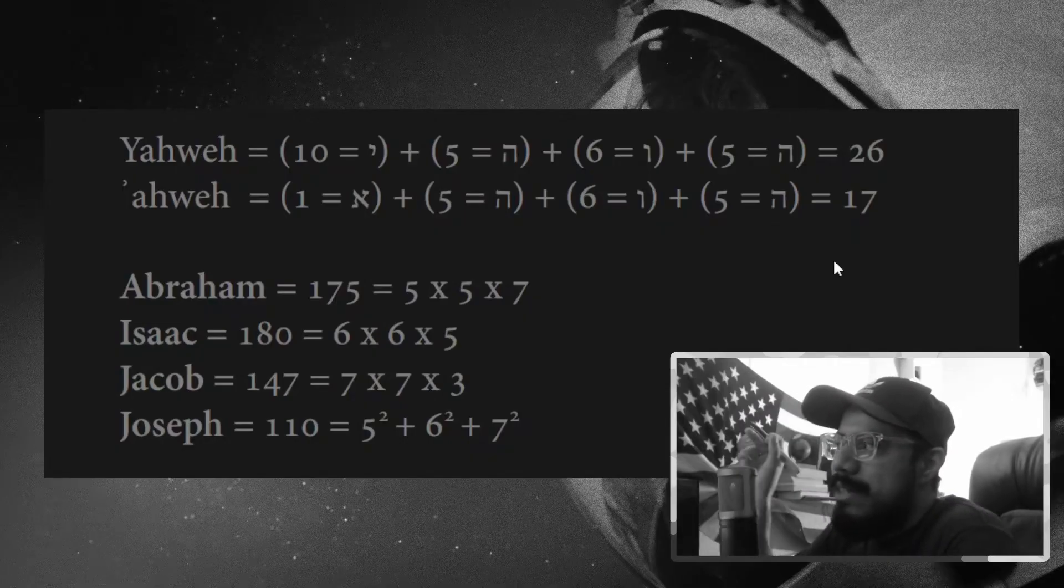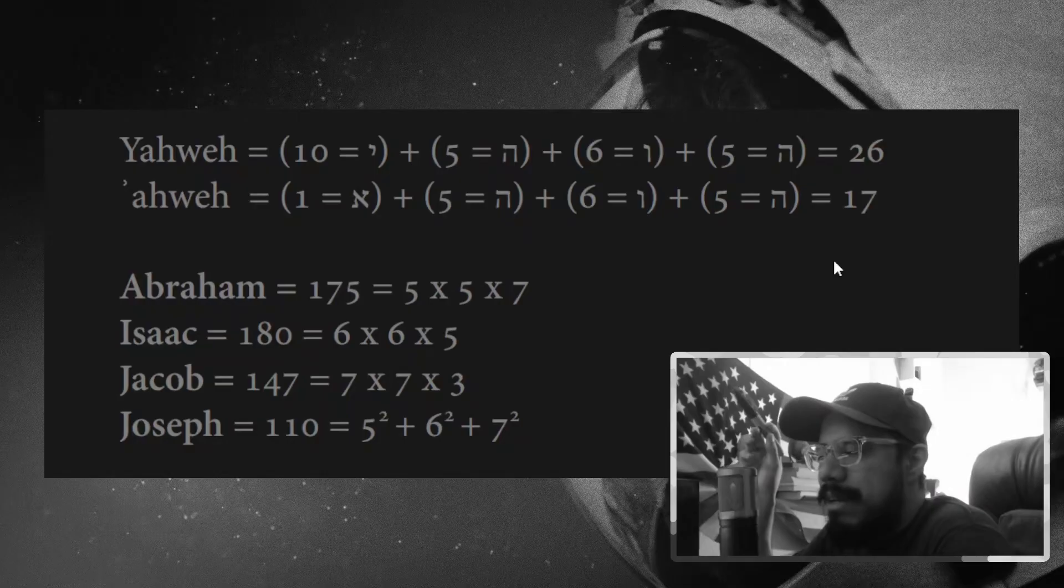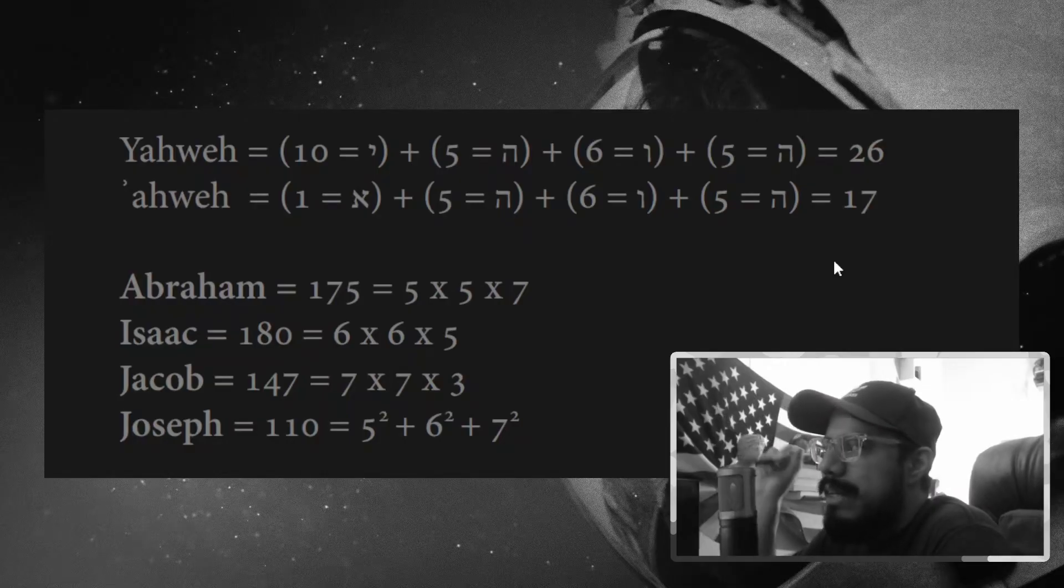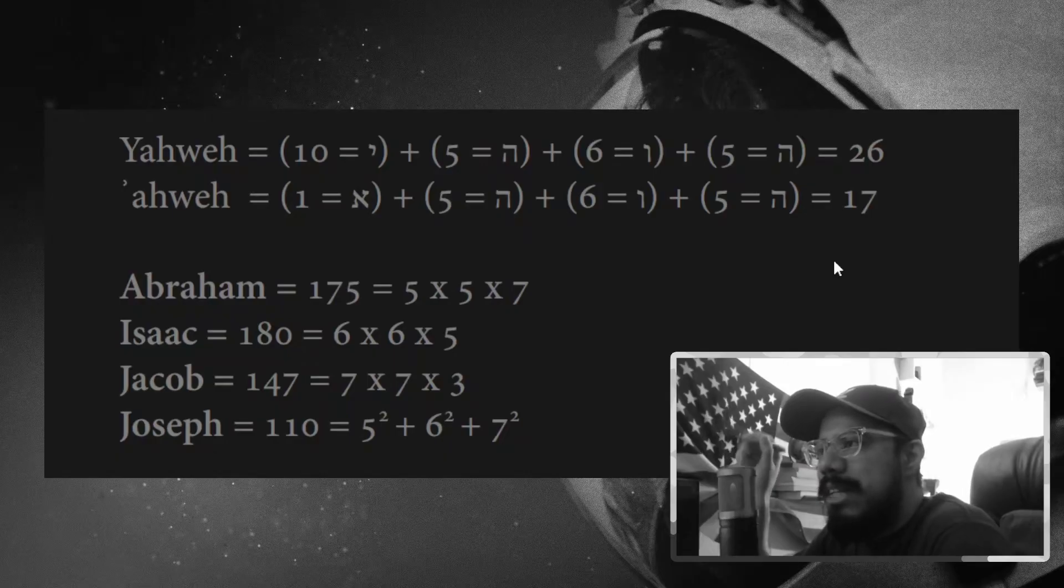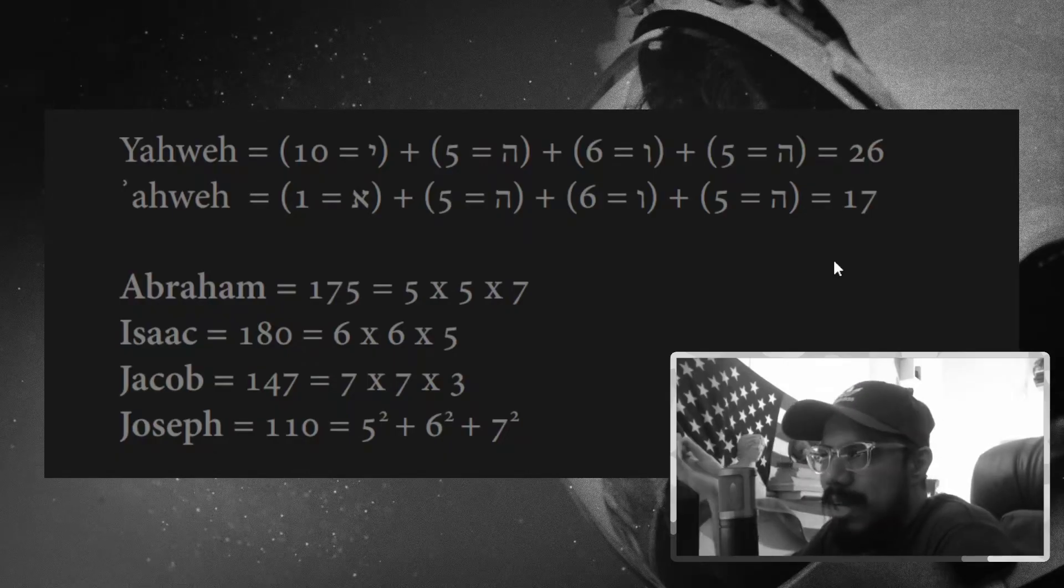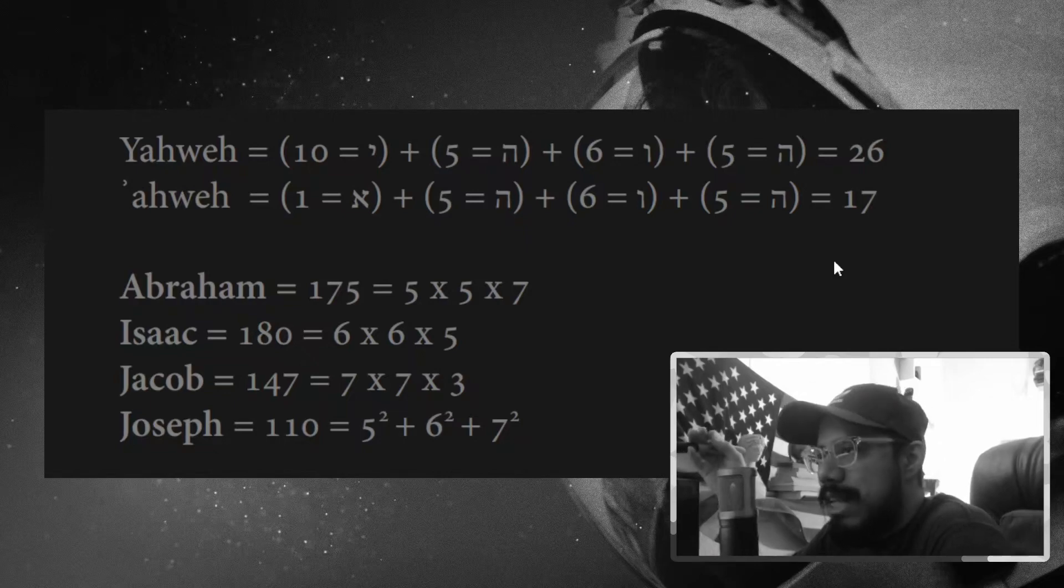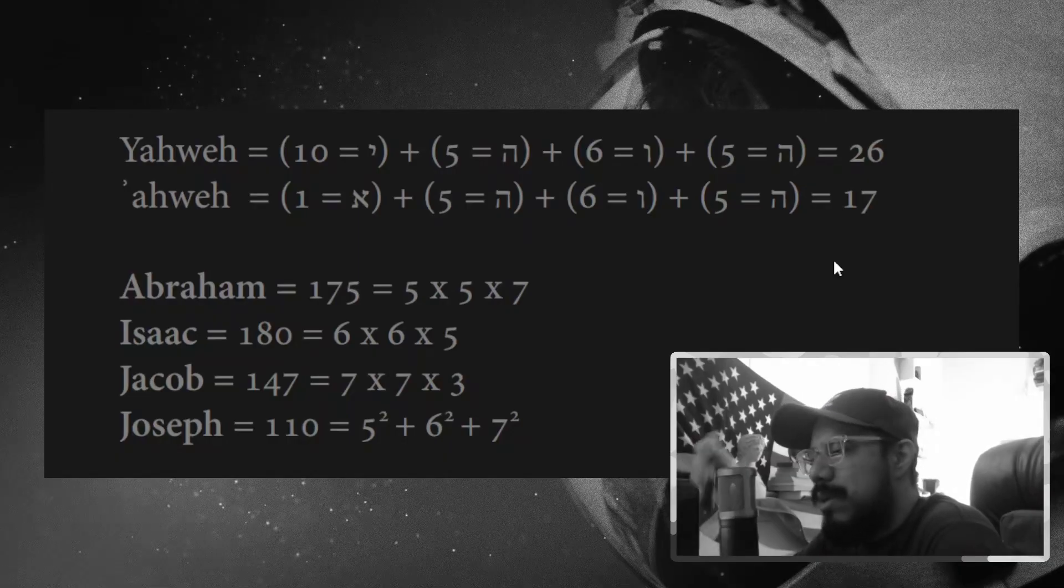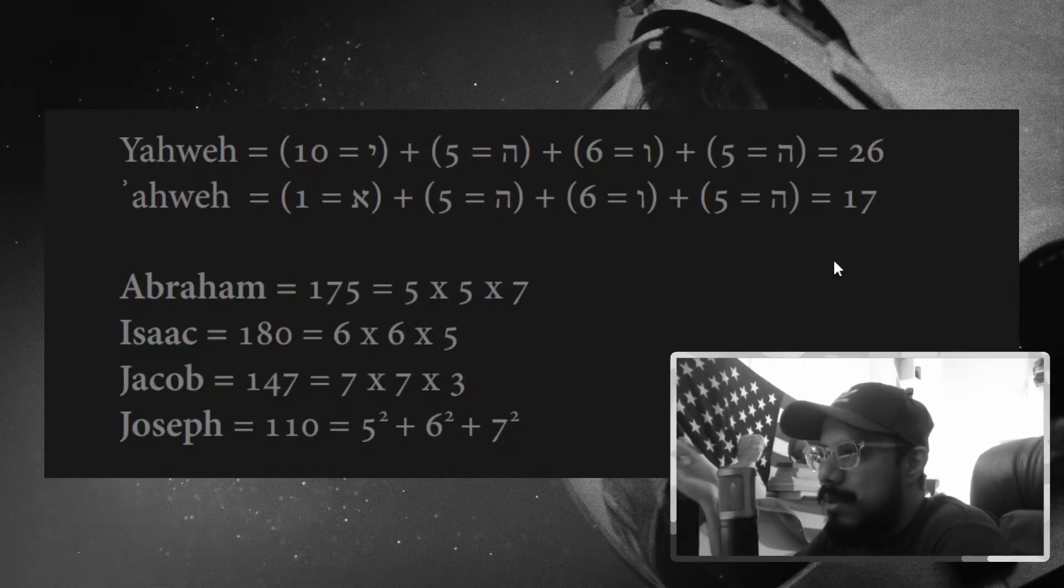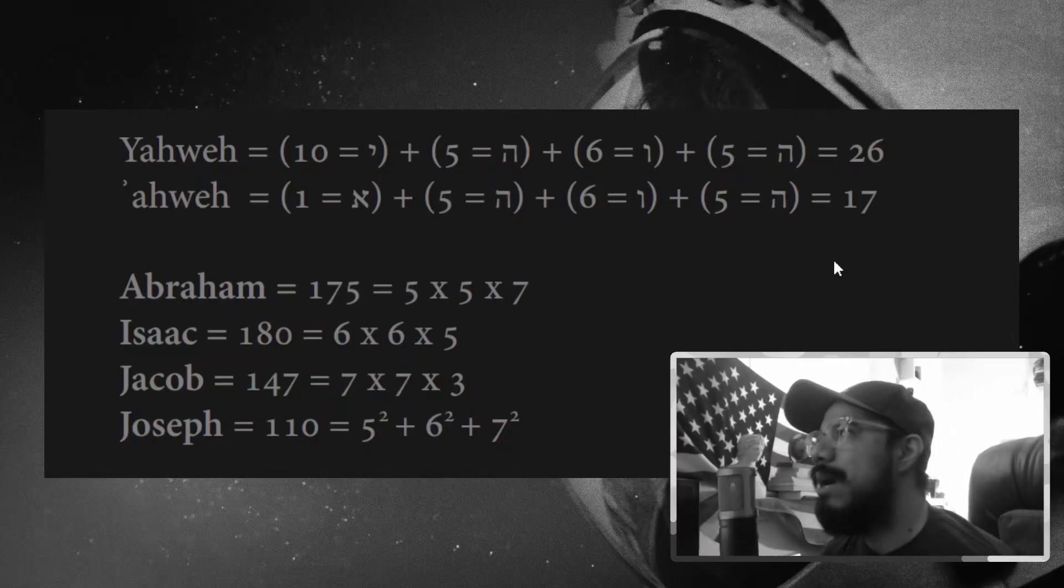Notice that we have this quadratic thing going on: 5 squared, 6 squared, 7 squared, and then the coefficient, what it's multiplying, is itself decreasing: 7, 5, 3. And the additional observation is that Joseph's lifespan is the sum of the quadratics. So the 5 squared from Abraham, the 6 squared from Isaac, the 7 squared from Jacob is ultimately going to be Joseph's lifespan. Now commentators in the past had noticed this before.